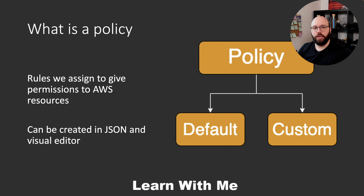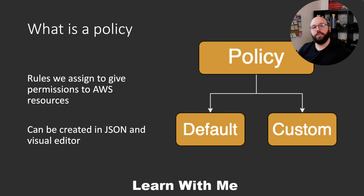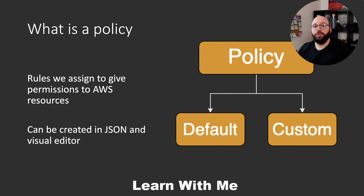So what is a policy? A policy is basically a rule that we set within AWS to give or remove permission from certain AWS resources. It's a rule to say: is this user allowed to access this resource — yes or no? And if they are allowed, do we need granular access — can they only see logs, restart certain resources, have full access, deploy certain functionalities, or create new resources? All of these can be set through policies, and policies can be set in two different ways.